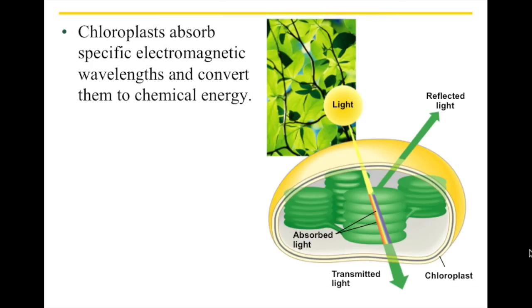In order to do this in a plant, as I mentioned before, you have to assemble a certain number of pieces. The chloroplast is the critical ingredient here, and the chloroplast is able to absorb certain wavelengths of light and convert them to chemical energy.